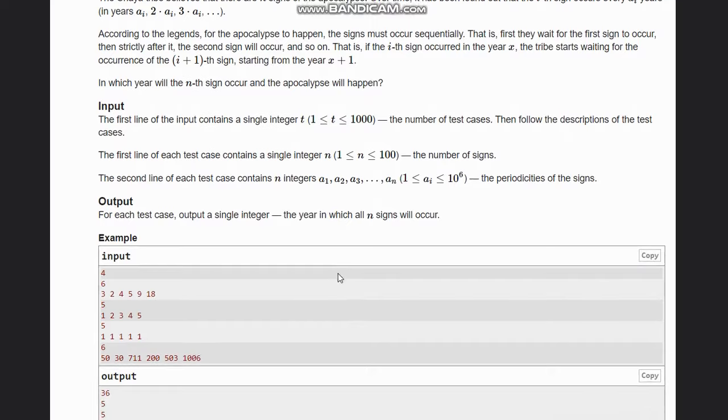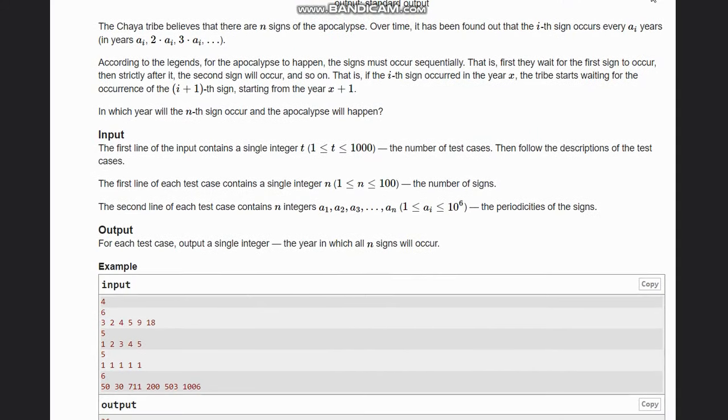So first let's understand the question through one of the examples. In case of this test case, you see that the first sign will occur in the third year. Why am I taking third year? The first input is 3. Then next is second year, but already second year is covered in third year. So for second year, the next can be a multiple of 2. So 2*2 is 4, and 4 is greater than 3, so it can happen in the fourth year.